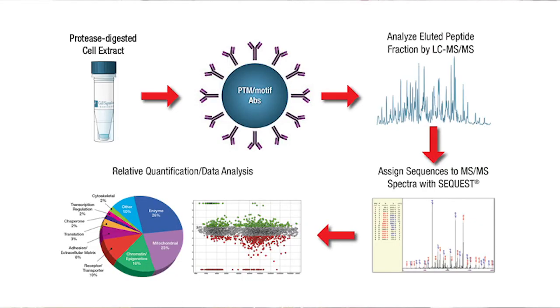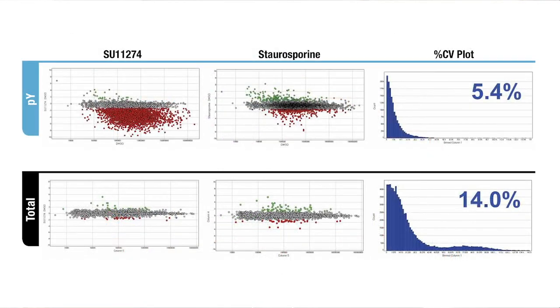Finally, IP techniques can be incorporated into proteomic studies. As just one example, you can enrich a population of signaling proteins carrying phosphorylation or other post-translational modifications using specialized motif antibodies, and then identify those proteins using mass spectrometry. This enables investigations into how signaling activities are altered in disease states or by treatments with activators or inhibitors.